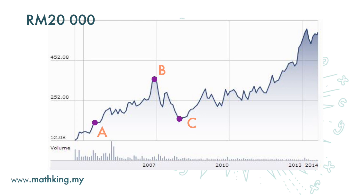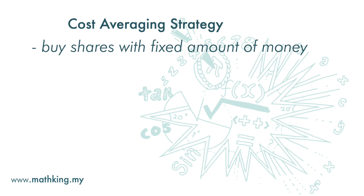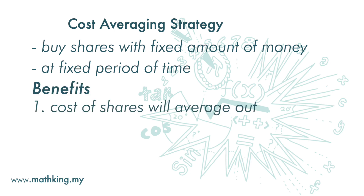So if you dislike fluctuation and want more stability, you can use this strategy called the cost averaging strategy. You buy shares at a fixed amount of money at fixed periods of time — for example, 2,000 ringgit every month — so the cost of the share will average out. This means that the risk is lower.